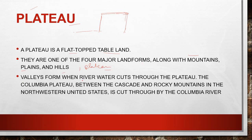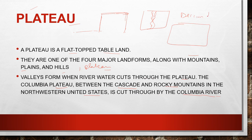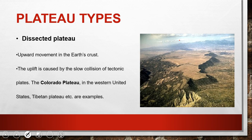A valley forms when river water cuts through a plateau. If a river cuts through a big plateau, a large valley forms crossing through it. For example, the Columbia Plateau, between the Cascade and the Rocky Mountains in the northwestern United States, is cut through by the Columbia River. These are examples of valleys formed due to the cutting of plateaus.